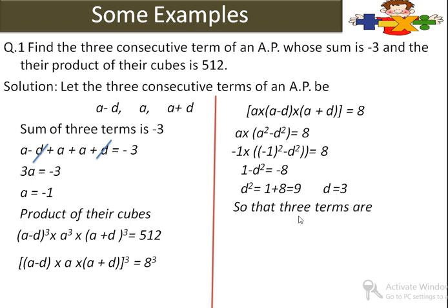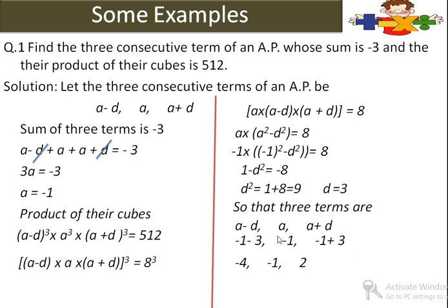So the three terms are: a minus d = minus 1 minus 3 = minus 4; a = minus 1; a plus d = minus 1 plus 3 = 2. इस तरह से हमें 3 consecutive terms मिली: minus 4, minus 1, 2.